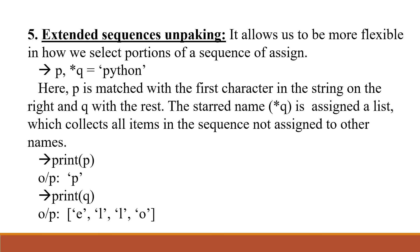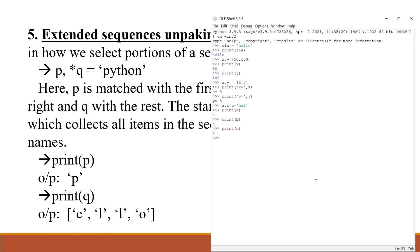For example, if we take p, *q = 'python', then print p gives the output as 'p', and print q gives the output as 'ython' in a list.